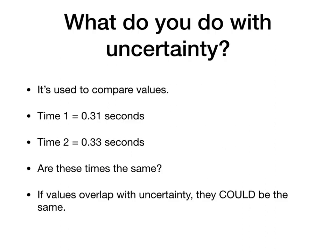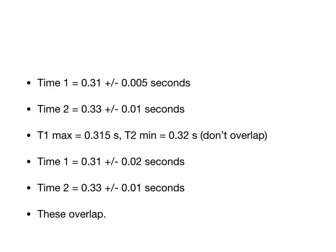So here's T1. If you just get two times, you don't know if they're the same or not. T1 is 0.3, T2 is 0.33. Are they the same or not? Who knows? But, if I do like this, if I have 0.31 plus or minus 0.005, and T2 is 0.33 plus or minus 0.01, then the maximum T1 is 0.315, and the minimum T2 is 0.32, and they don't overlap. So, I would say those two values are probably different. However, if I change that, and in the second case, they do overlap, and they could be the same.